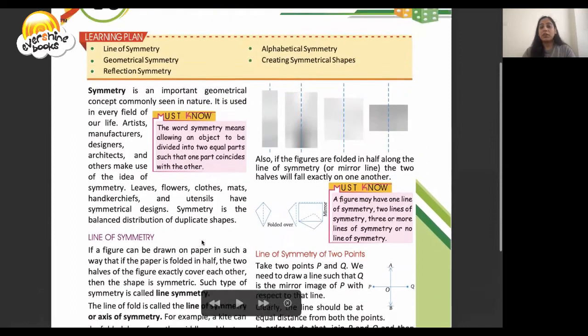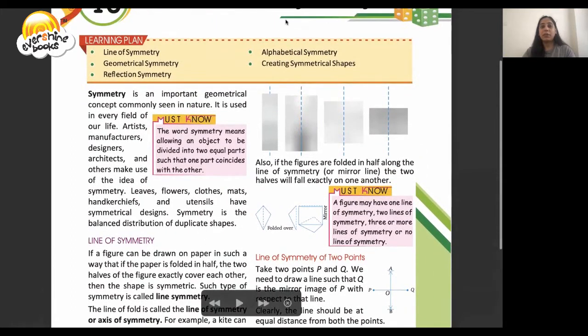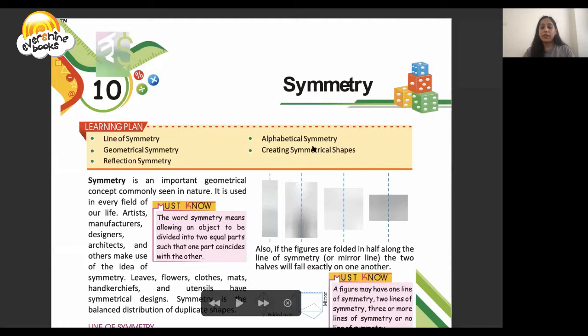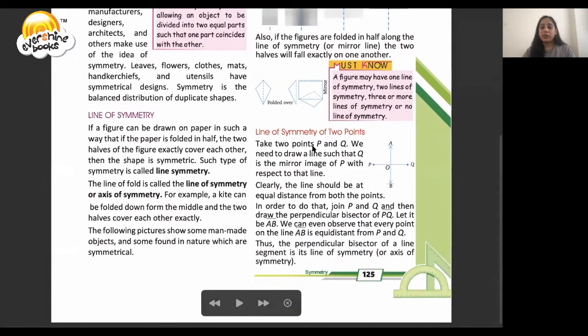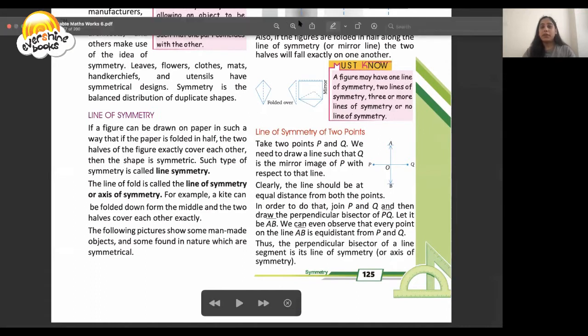Now let's see line of symmetry of two points. Take two points P and Q. To draw the mirror image of PQ, we need to draw a line such that Q is the mirror image of P.